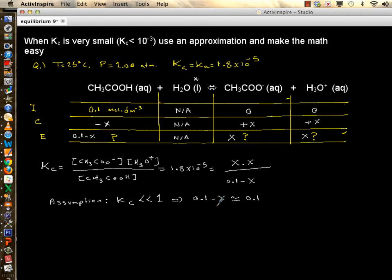x is such a small number that when you subtract it, it's the same number. If you do that, life becomes easier. 1.8 times 10 to minus 5 simply becomes x squared divided by 0.1. There is no more subtraction of x.